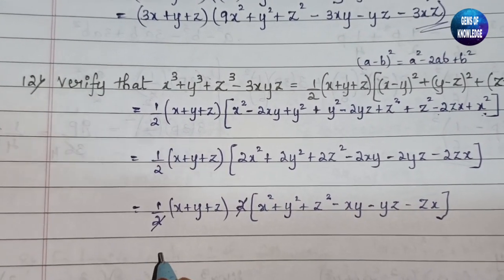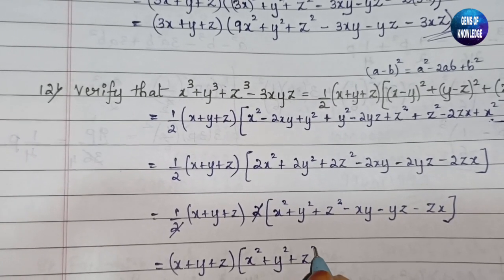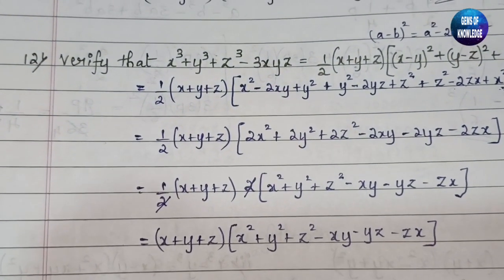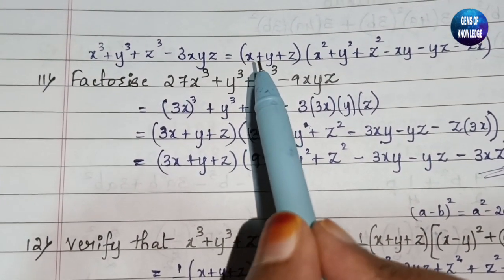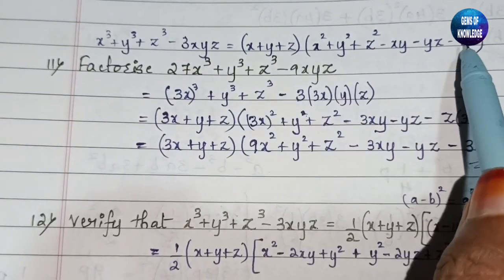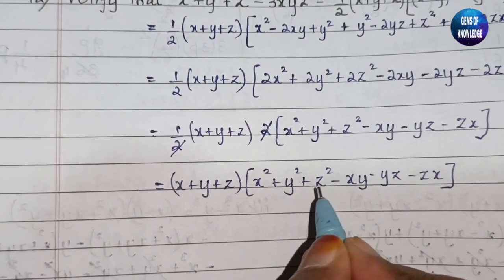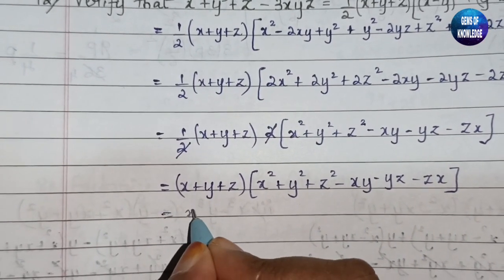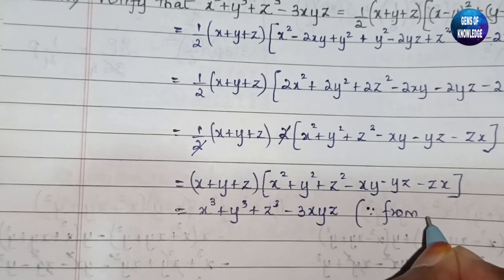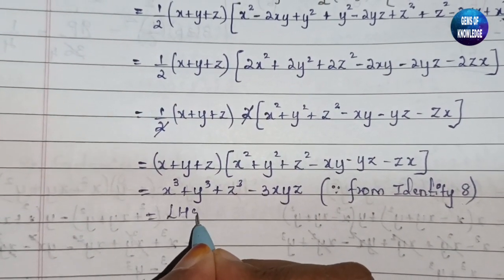We have ½ × (x + y + z) × 2(x² + y² + z² - xy - yz - zx). The 2 and the ½ cancel each other, leaving (x + y + z)(x² + y² + z² - xy - yz - zx). From Identity 8, this equals x³ + y³ + z³ - 3xyz, which is the left-hand side. Hence it is verified.